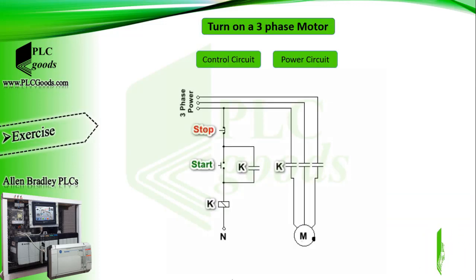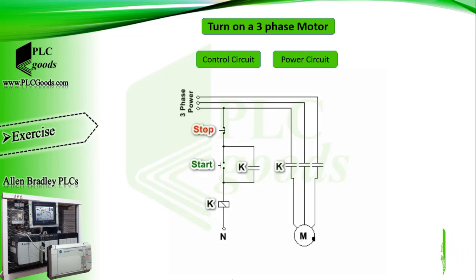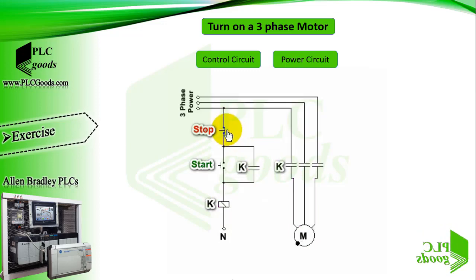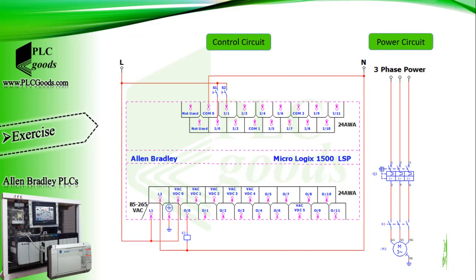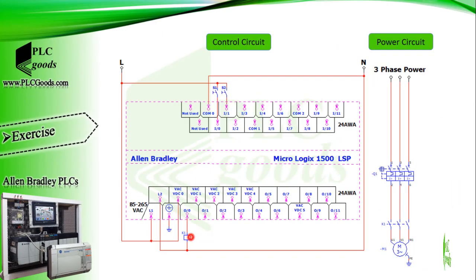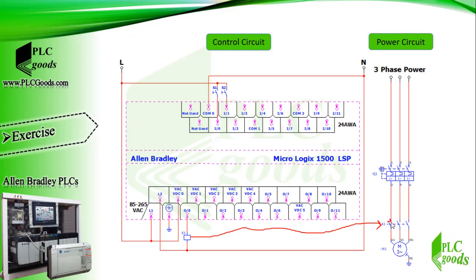Let's do a simple exercise. Here is a simple industrial circuit to turn a three-phase motor on and off. It can be divided into two parts: the control circuit and the power circuit. When the start push button is pressed, the K contactor is powered and closes its normally open contacts. The motor will remain on until the stop push button is pressed. PLCs can turn on small devices like signal lamps or contactors, but they don't have enough power to turn on three-phase motors directly, so a PLC must use a contactor whose contacts are used to turn on the three-phase motor in the power circuit.